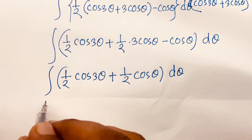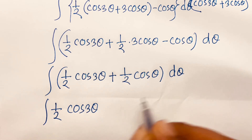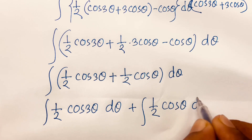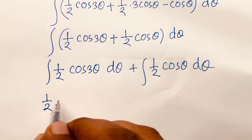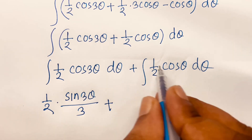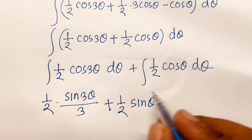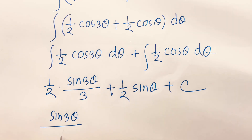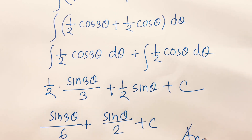Splitting into two integrals: (1/2)∫cos(3θ) dθ + (1/2)∫2cos(θ) dθ. Integrating gives sin(3θ)/6 + sin(θ)/2 + C. This is our final answer.